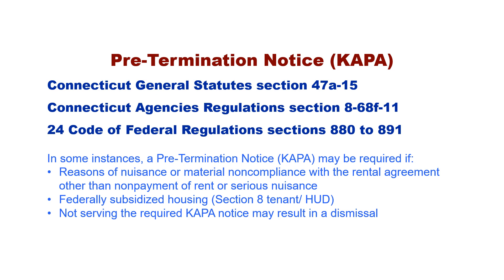Pre-termination Notice. In some cases, a pre-termination notice, also referred to as a Kappa notice, may be required before serving the notice to quit. Grounds which may require a pre-termination notice include a ground called nuisance, or another ground called material non-compliance by the tenant with the terms of the rental agreement, other than claims of non-payment of rent or serious nuisance. To decide if a pre-termination notice is needed in your situation, please review the state laws and regulations regarding pre-termination notices, including Connecticut General Statutes Section 47A-15. If the tenant resides in state public housing, please see Connecticut Agencies Regulations Section 8-68F-11.